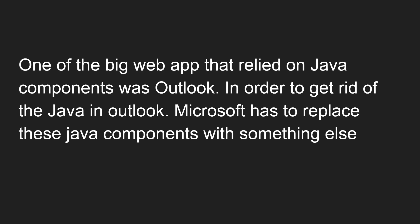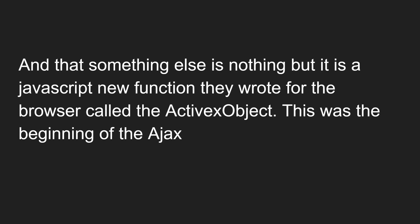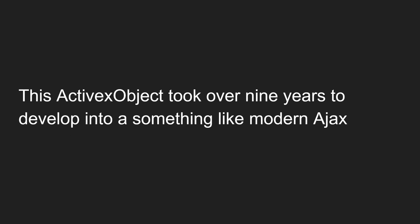By this time, Microsoft had incorporated many Java components into their software. One of the biggest web apps relying on Java components was Outlook. To get rid of Java in Outlook, Microsoft had to replace those Java components with something else. That something else was a new JavaScript function they wrote for the browser — called the ActiveX object — because Internet Explorer was the dominant browser at the time. This was the beginning of AJAX.